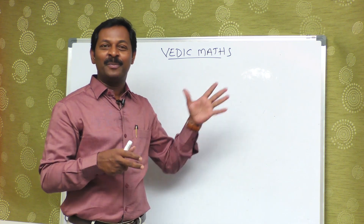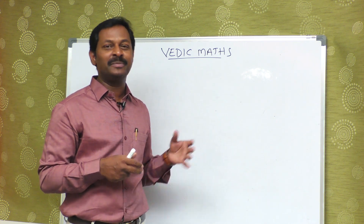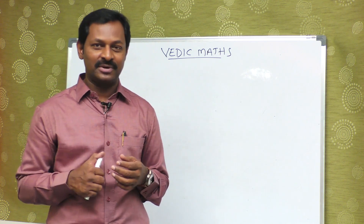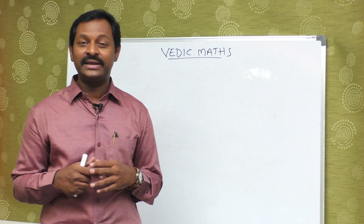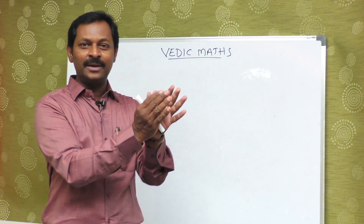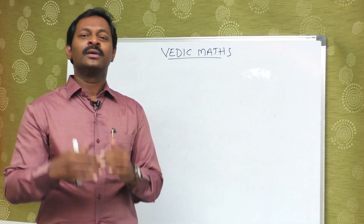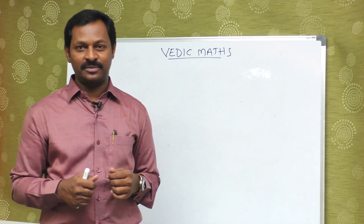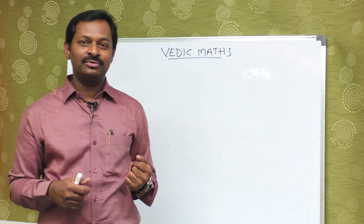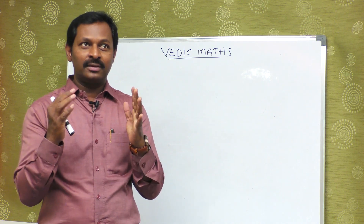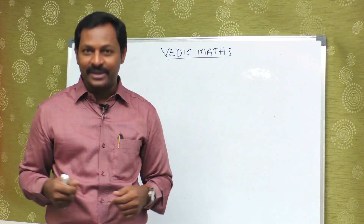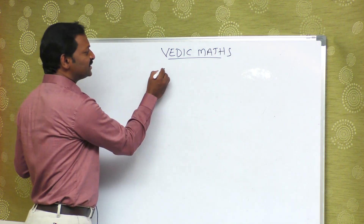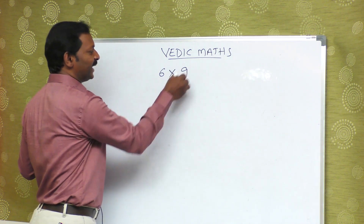We have to make some concepts in that way. So, in the last session, we have to make 9s. In the last episode, 6 is multiplied by 9. One number is 9.